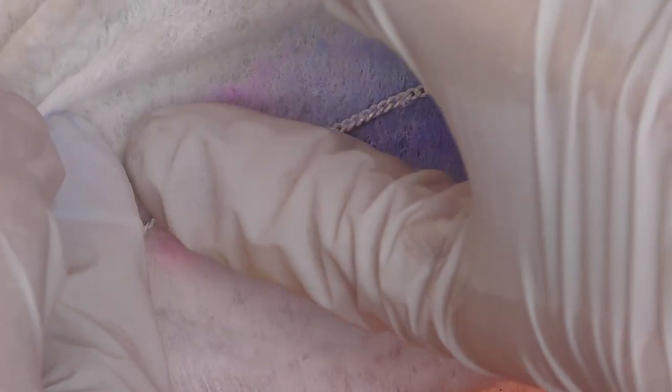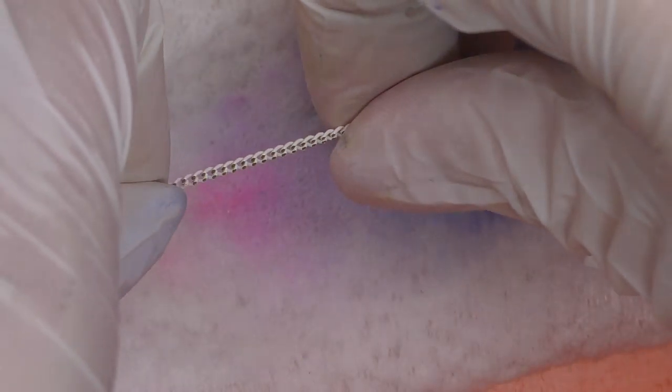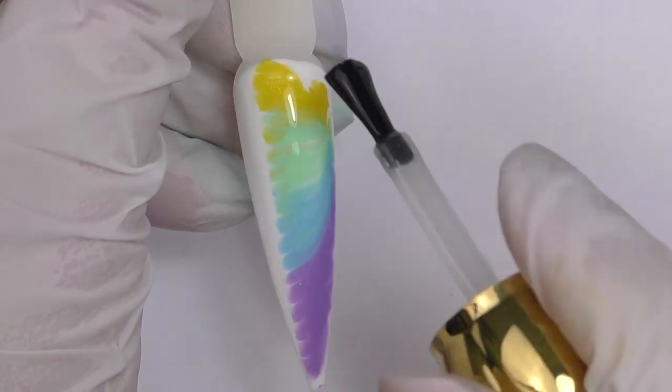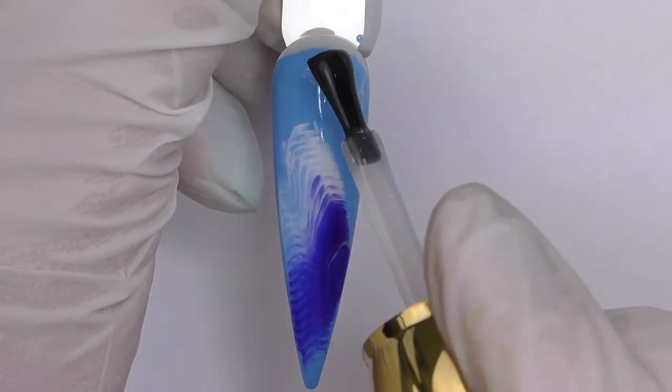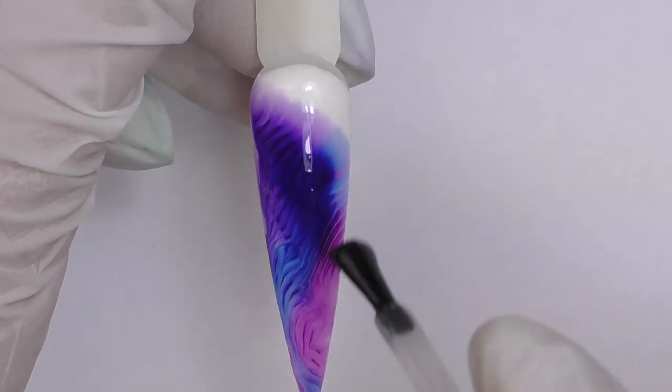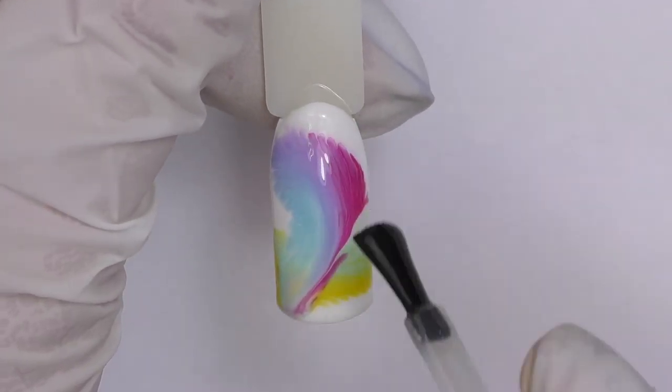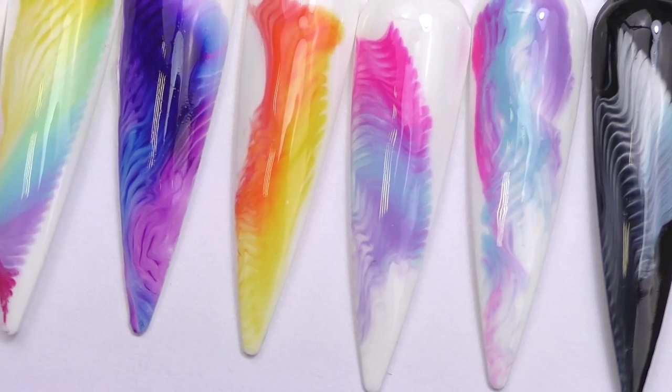When you are done with your art, simply clean your chains with the lint-free wipe which is saturated with alcohol or cleanser. Actually it's pretty easy to clean it and you do not have to clean it after every design only when you finish your work. And then we need to seal the designs with the top coat and also it is very important to fully cure each color especially if you use some dark colors. Usually it takes a little longer to fully cure them. Then cure the top coat in LED for 30 seconds and we are done here.